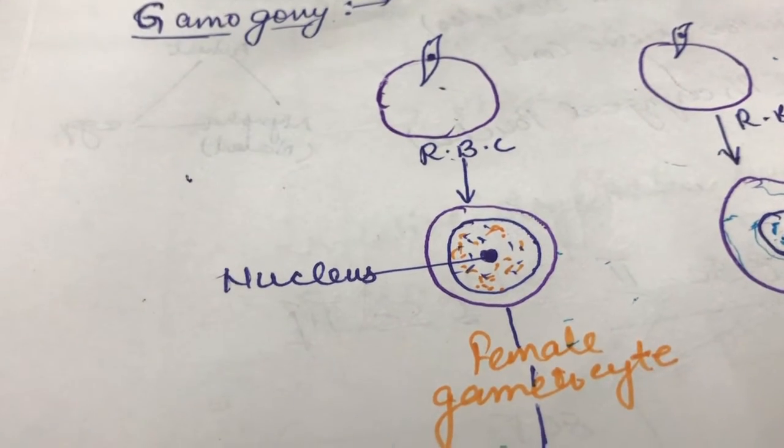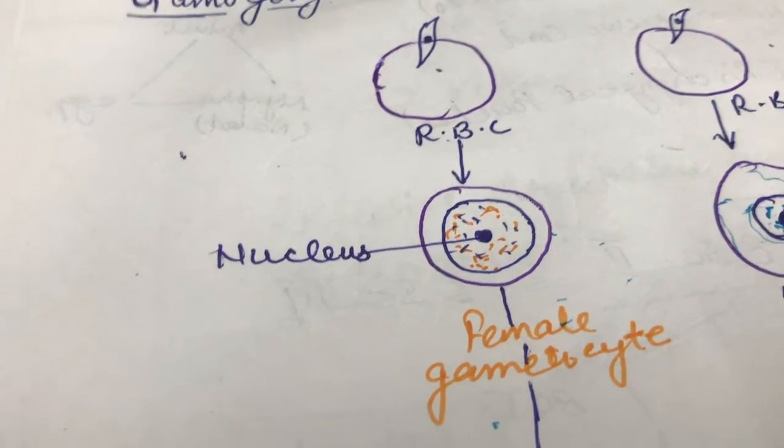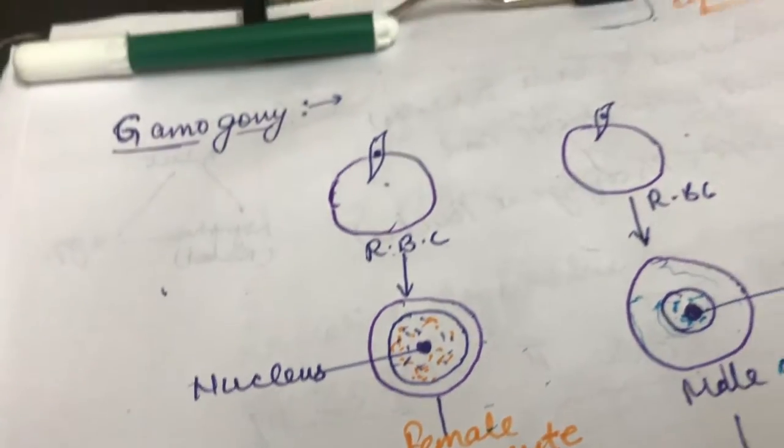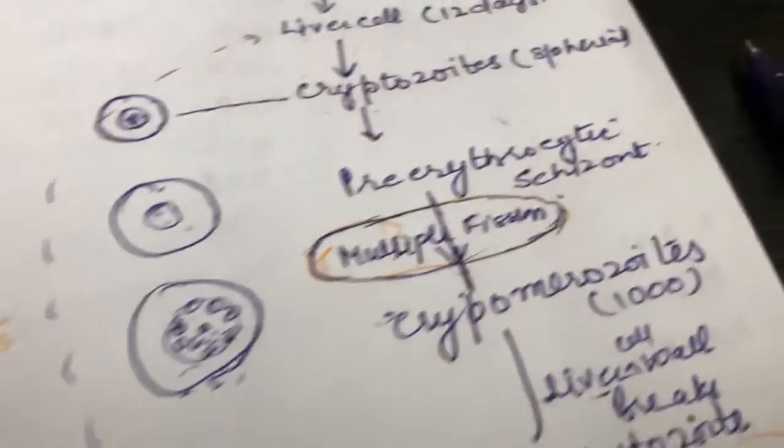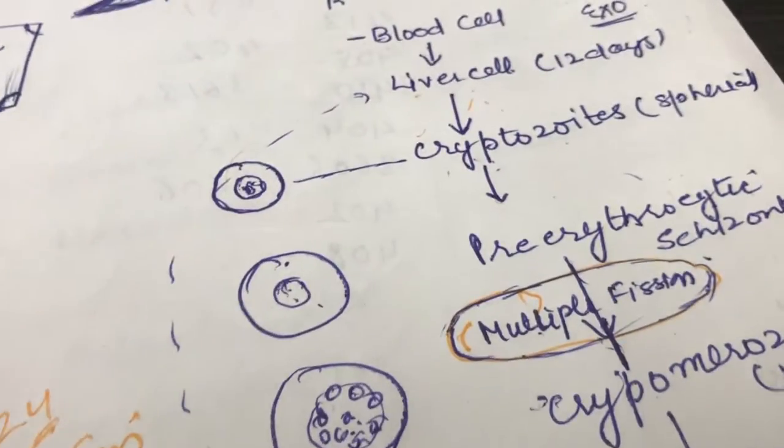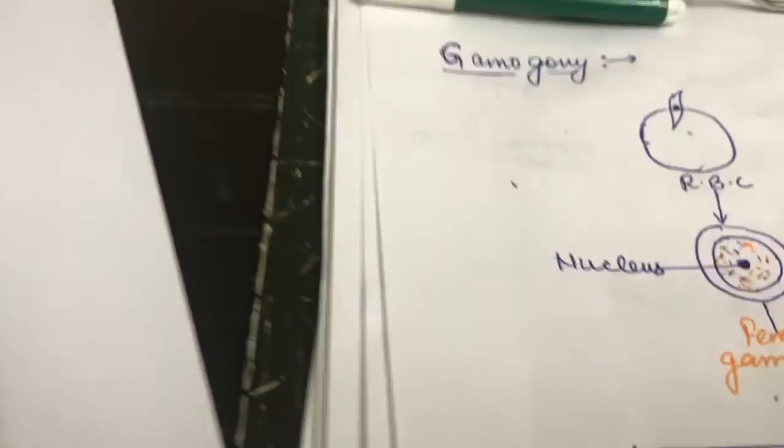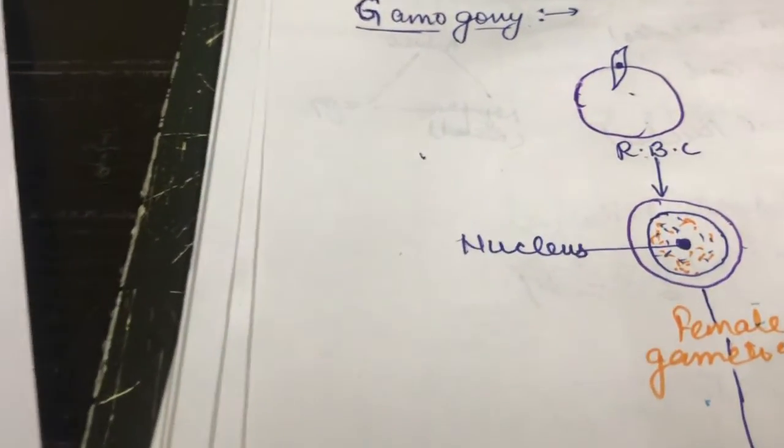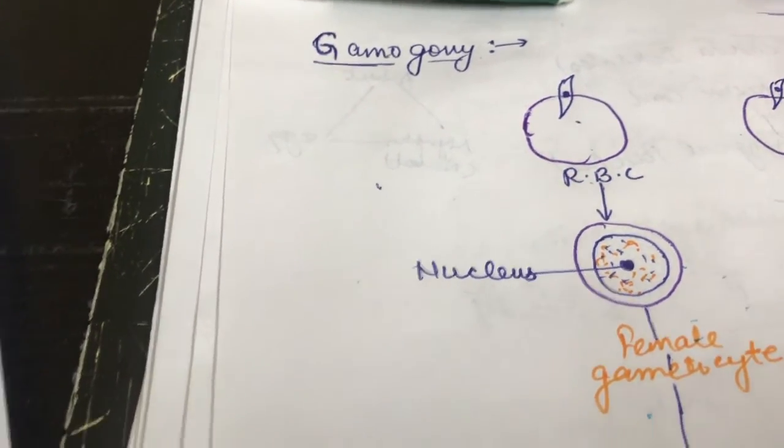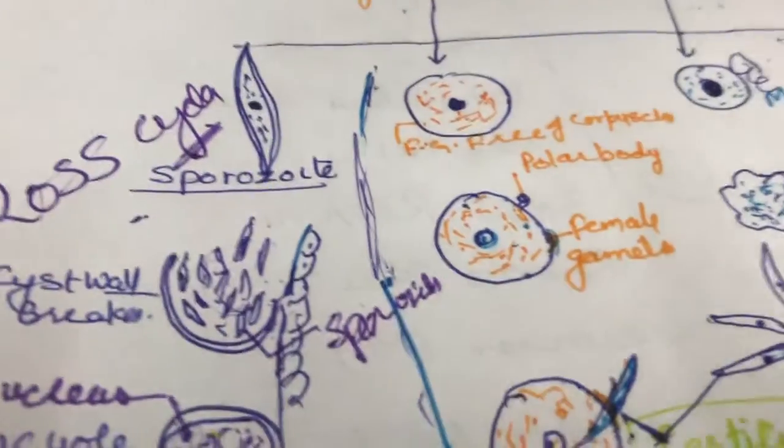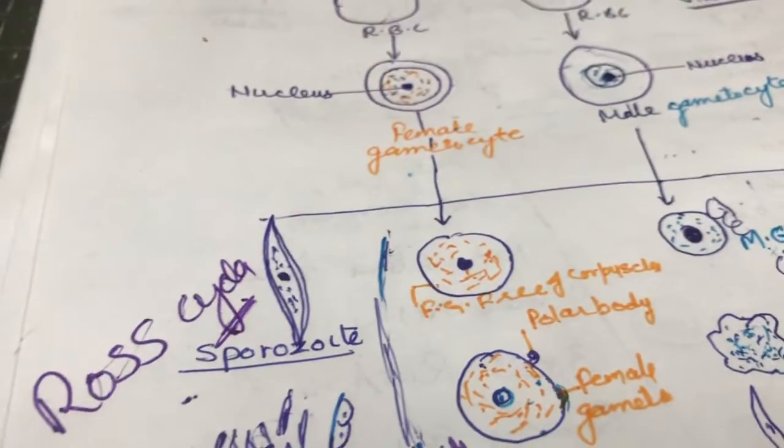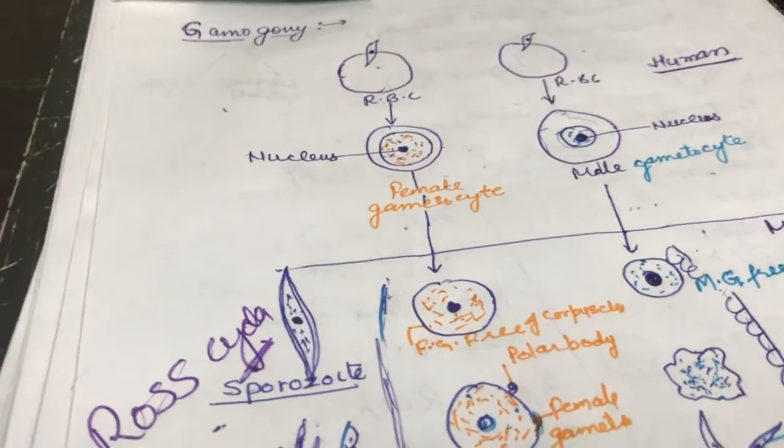This is Plasmodium vivax. It is called asexual generation, meaning they multiply. We learned that when the cysts divide, it is divided in our RBCs. This is multiple fission. This is gamogony, the sexual phase. That means here is a life cycle which is an alternation of generation. Alternation of generation means sexual and asexual phases.